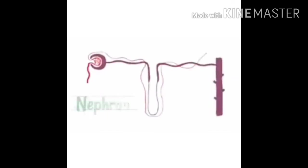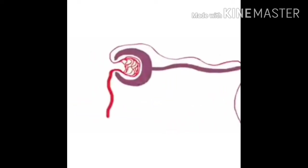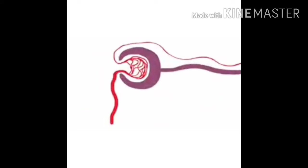Inside the kidneys there are lots of tiny structures known as nephrons. Inside each kidney there might be about a million of these — they are really, really small. Let's look closer at the first step of the nephron, where blood is entering from a branch of the renal artery.